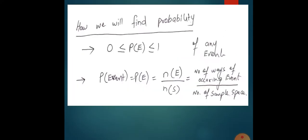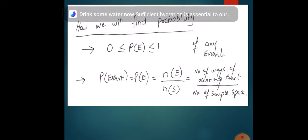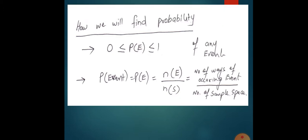Now, how do we find the probability? First, note that the probability of any occurring event will be a maximum of one and a minimum of zero. If there is no chance of an event occurring, the probability is zero. If the number of chances is 100 percent, the probability is one. So the probability of any event lies between zero and one. The formula is: probability of any event = number of favorable events over number of sample space.